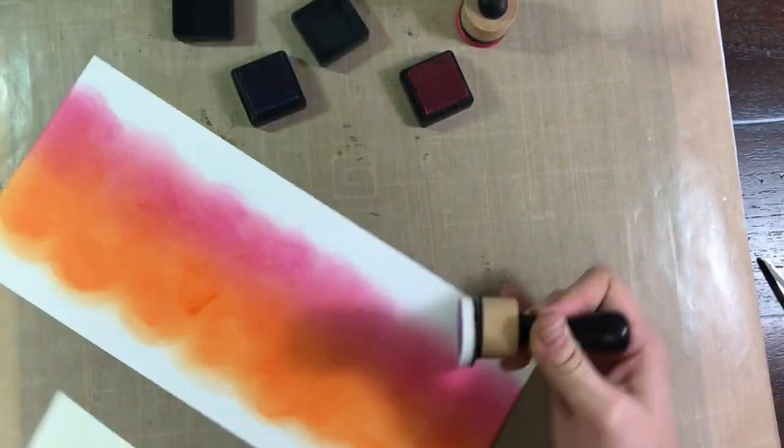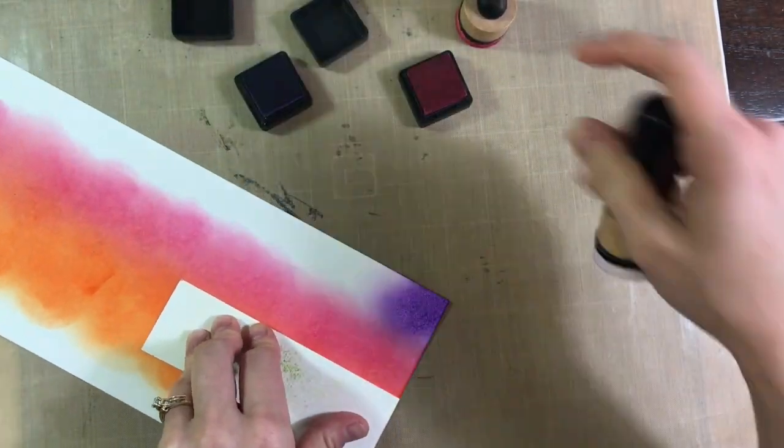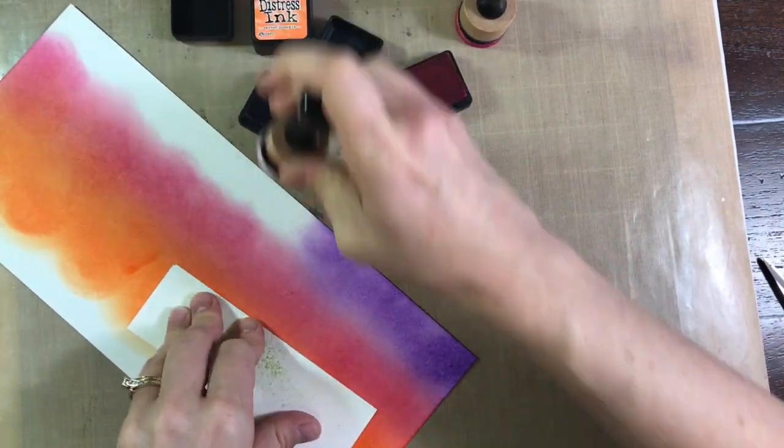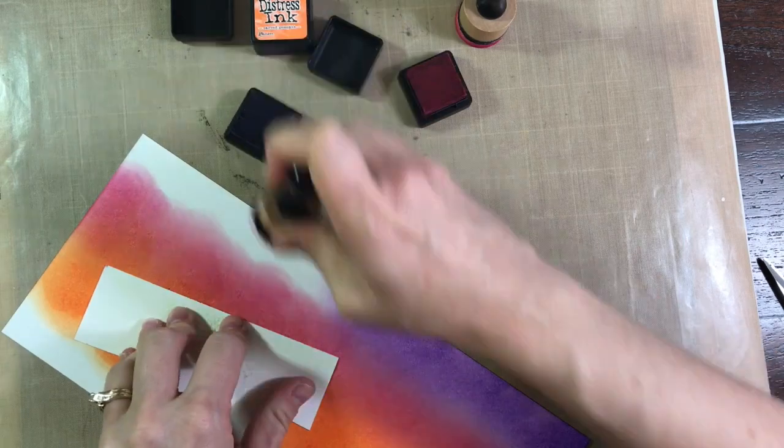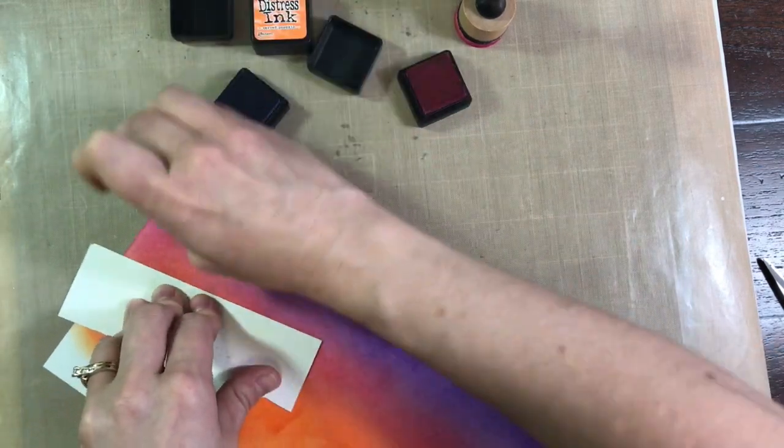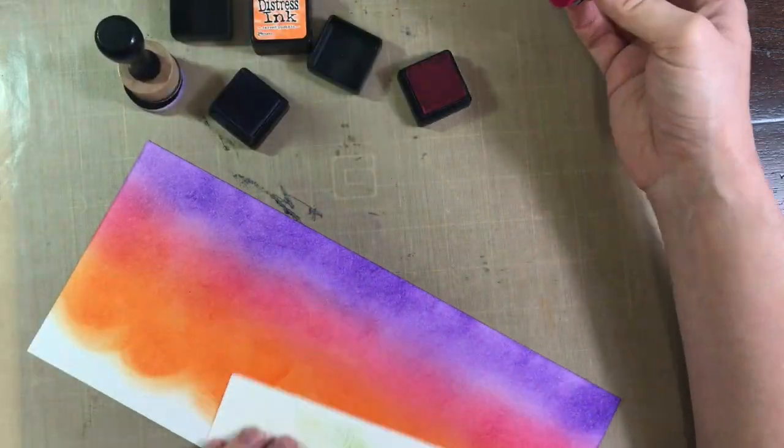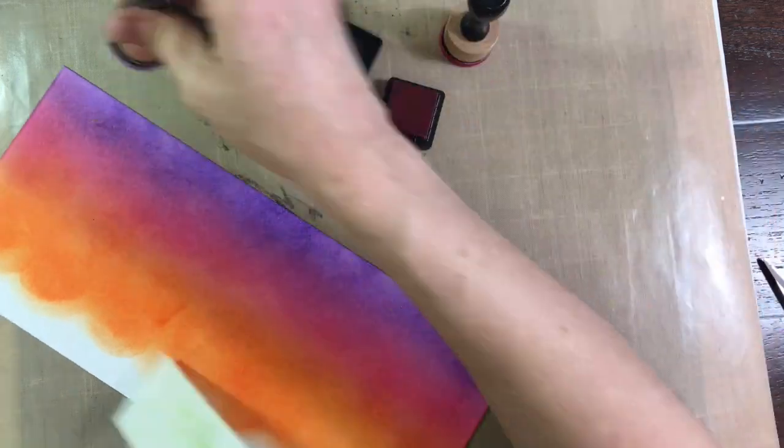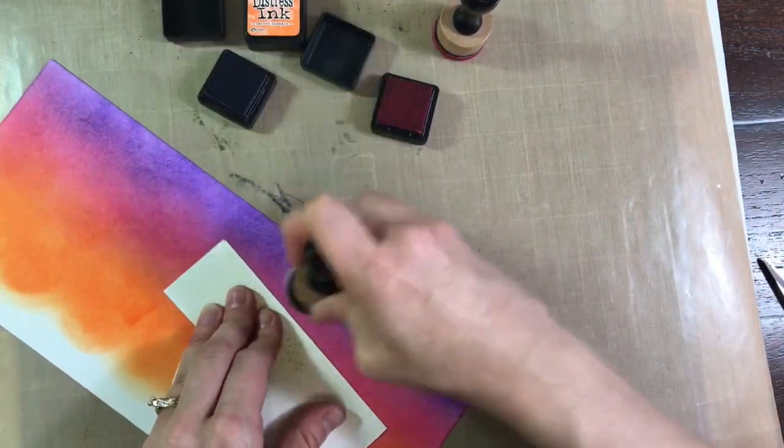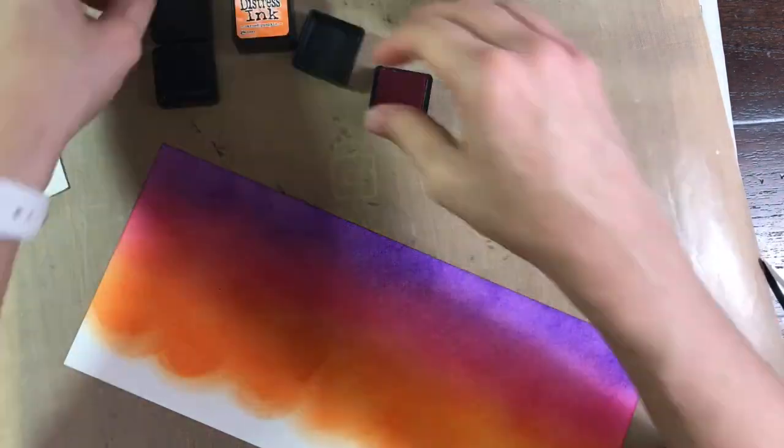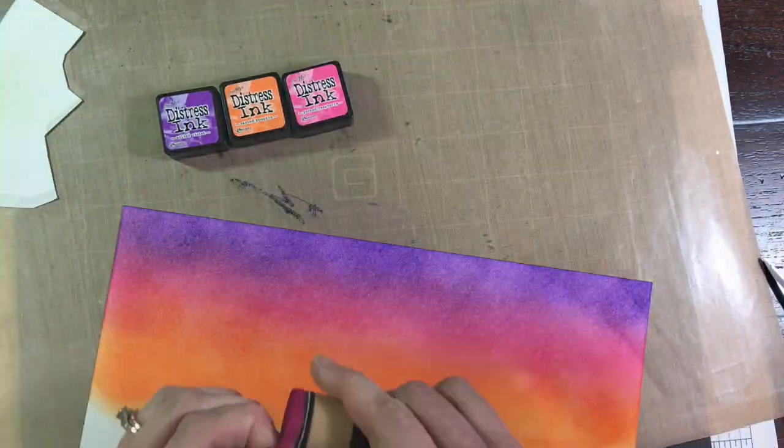It's called ink blending, and these inks usually blend so beautifully. I'm actually using Bristol Smooth watercolor paper, and they tend to blend just beautifully on this Bristol paper. You can see it's a little bit splotchy, and all I'm doing is just going over and over again using three different colors. I am using Carved Pumpkin is the orange, Wilted Violet is the purple color, and Pickled Raspberry is the pink.